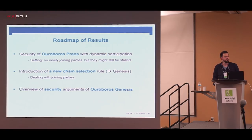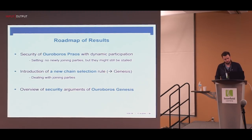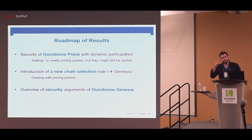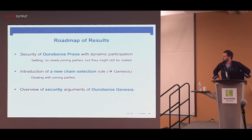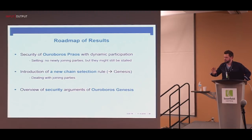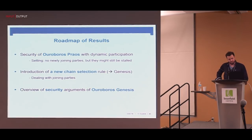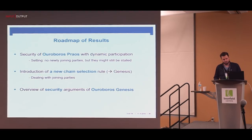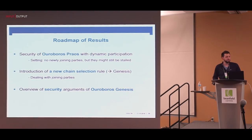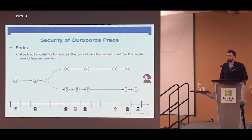To give a technical roadmap of results: first we check that Ouroboros Praos is a good foundation to build on, and we analyze the protocol in a dynamic participation setting — specifically the simpler setting where no new parties join but parties might fall asleep. In a second step we introduce the new chain selection rule that is supposed to deal with new registrations and joining parties. Finally, if time permits, I'll give some overview of the arguments to convince you that the new chain selection rule is really useful.